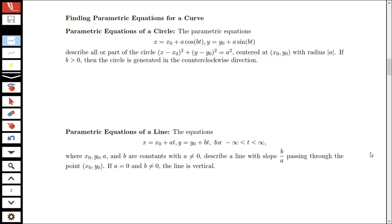In this video, we're going to be looking at finding parametric equations for a curve. Previously, we've been focused on being given a set of parametric equations, then making a sketch of our parametric curve, and eliminating the parameter to obtain our equation in x and y. Here we're going to focus on being given a curve, usually something in terms of x and y, or some information about a graph, and we'll need to set up parametric equations for that graph.